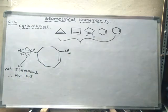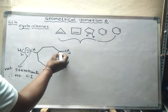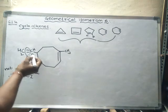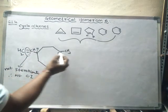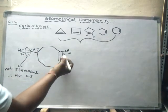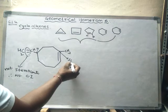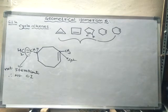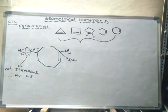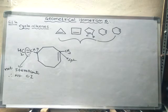Now let us check the cycloalkane part. This carbon is sp3, but the adjacent carbon involved in the ring double bond is sp2. Hence there is no cycloalkane stereocenter here — no stereocenter due to the cycloalkane portion because of the sp2 hybridized carbon in the ring.